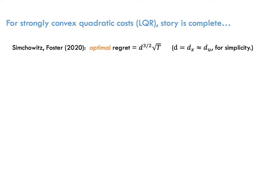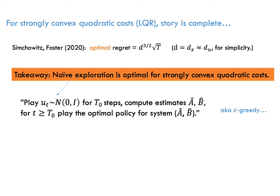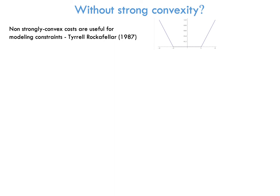For the case where the cost is a strongly convex quadratic function, Simcovic and Foster pinned down the optimal regret and completed the story for online LQR. However, their work had a surprising takeaway, which was that naive exploration is optimal for strongly quadratic costs. When I say naive exploration, I mean the following strategy. We play random controls for some number of steps. Then we use the gathered observations to estimate the system matrices. And then we execute the optimal policy for the estimated system until the end. This is the analog of epsilon greedy in reinforcement learning, and this is why this is a surprising result. Epsilon greedy is in general a bad strategy in reinforcement learning, while here it is optimal. As it can be seen from the analysis, strong convexity of the cost is the key property behind this result, which can be generalized for strongly convex costs.